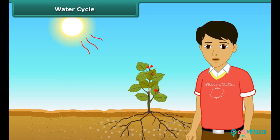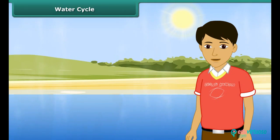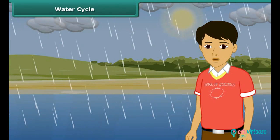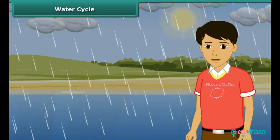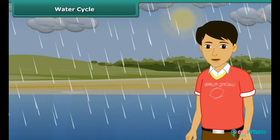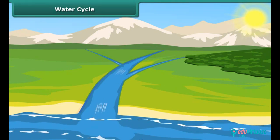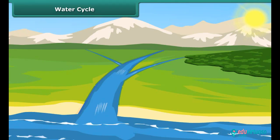The release of water vapor by plants is called transpiration. The water vapor rises up into the air, cools and turns into tiny water droplets. These droplets come together to form clouds — this process is called condensation. When the clouds become too heavy, the water droplets fall on earth in the form of rain, hail, sleet or snow. This process is known as precipitation. The water received by earth then goes into the oceans, seas, rivers and lakes.